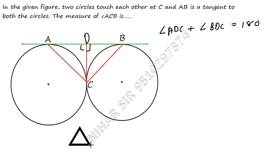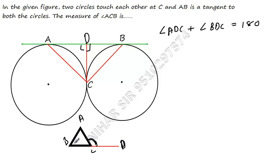Now let's recall the exterior angle of a triangle rule. If we have a triangle ABC and extend one side to point D, then the exterior angle ACD is equal to the sum of the two non-adjacent interior angles. So ACD equals the sum of those two interior angles. Similarly here, angle ADC is exterior to triangle BDC.